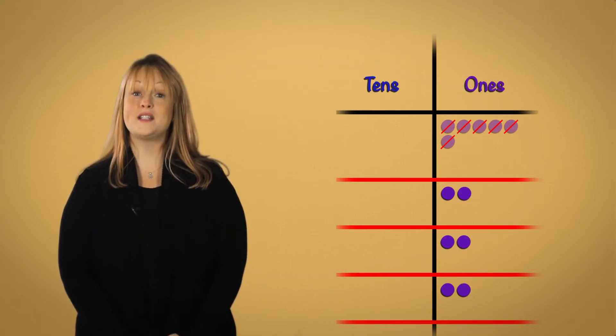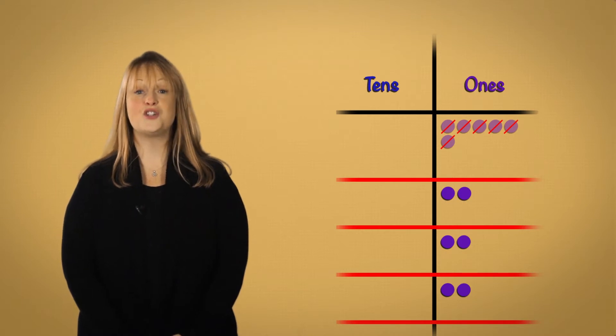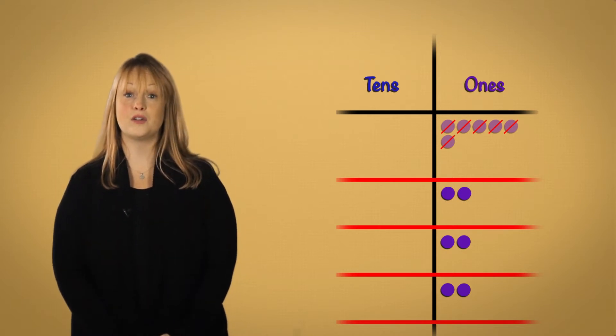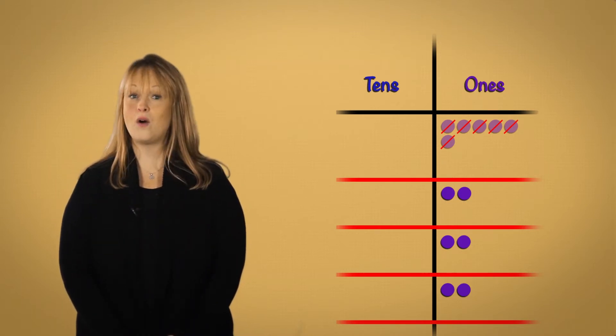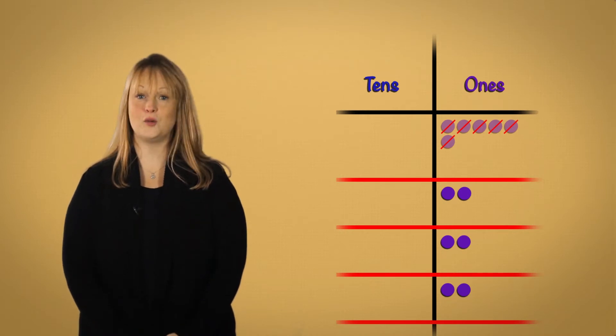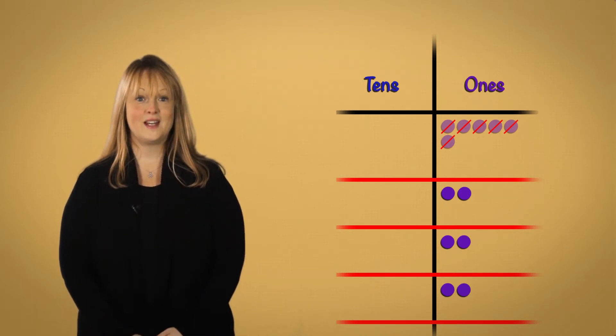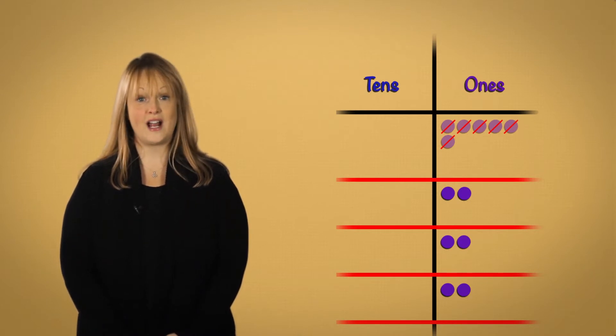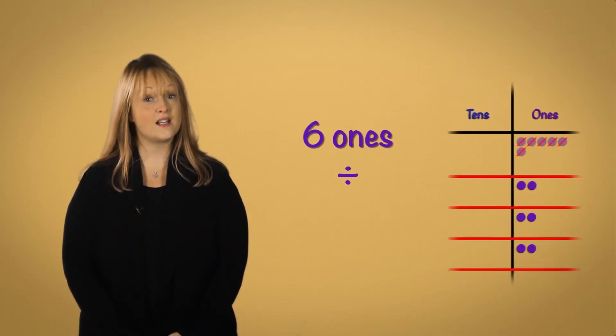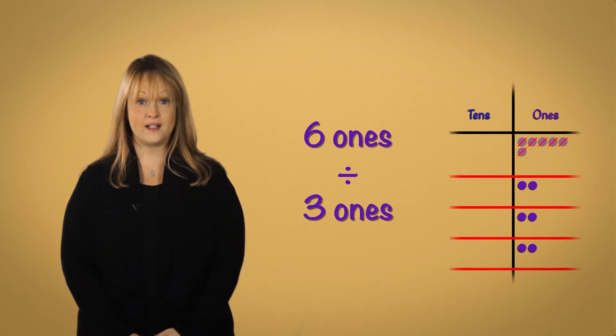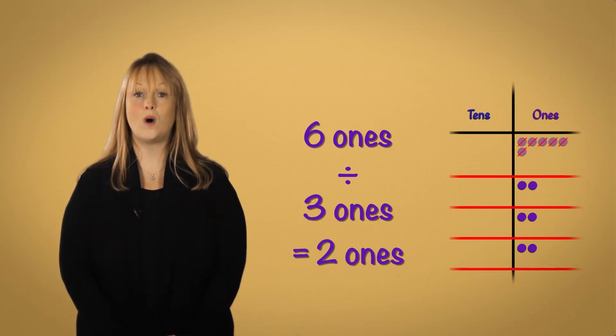Notice how I'm crossing out a disk up here each time I move one to the groups. No matter how hard I try, I can't make new pieces of candy out of thin air. Now each trick-or-treater has an equal amount of candy. We divided six ones by three to get two ones.